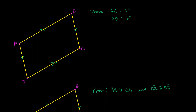What we're going to prove in this video is a couple of fairly straightforward parallelogram-related proofs. In this first one, we have parallelogram ABCD, and we want to prove that the opposite sides have the same length — that AB is equal to DC, and that AD is equal to BC.